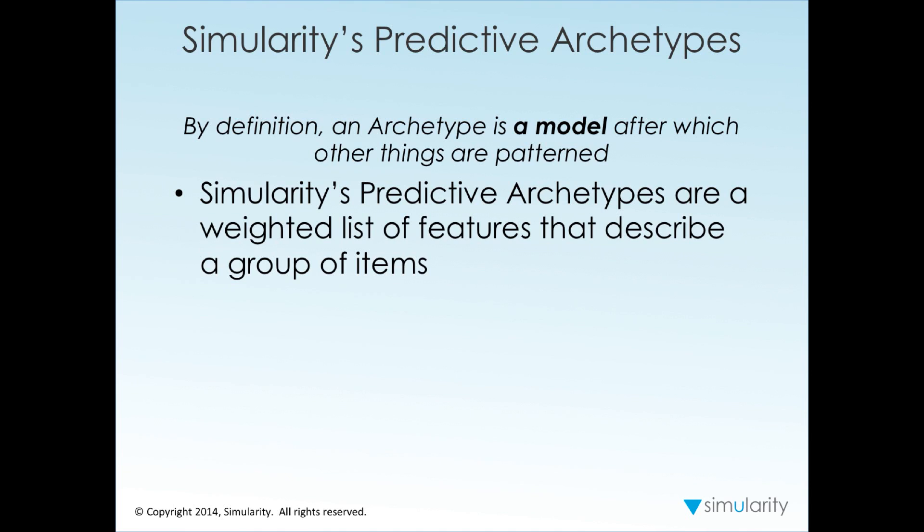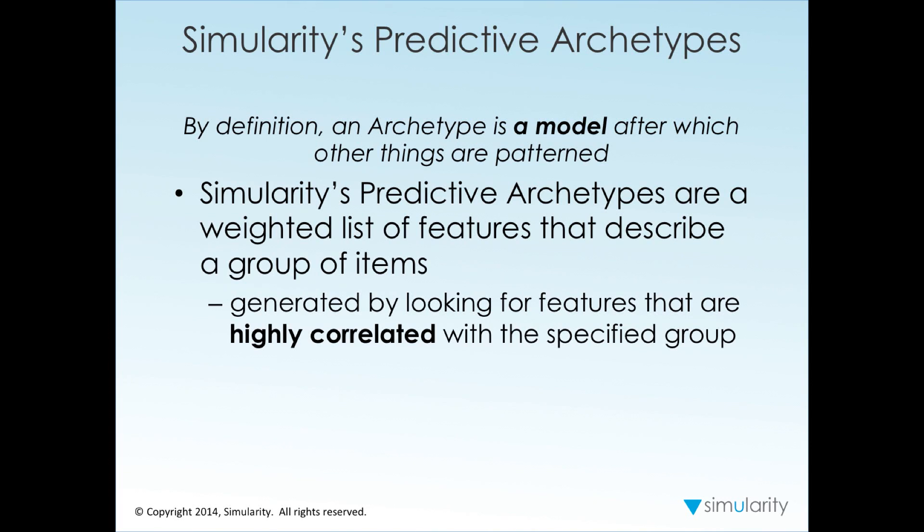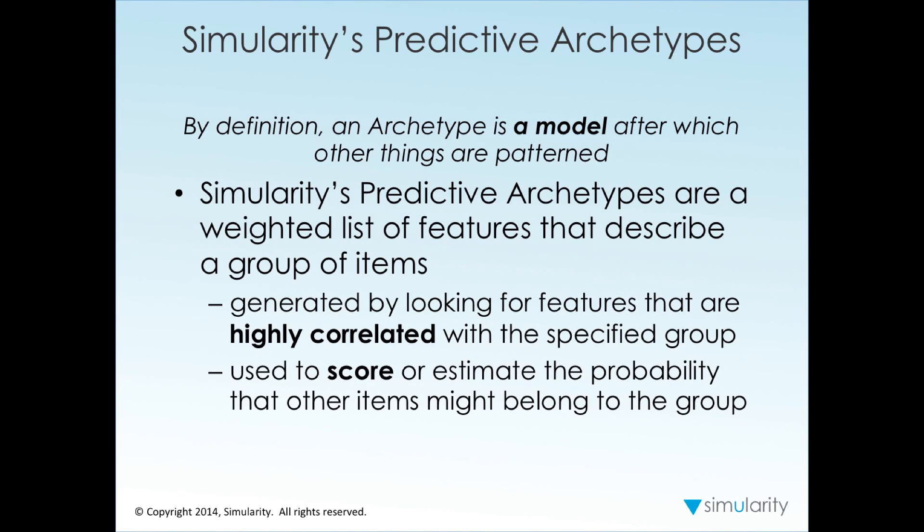Our predictive archetypes are a weighted list of features that describe a group of items. A group of items may be events that you're trying to model or predict. It's generated by looking for features that are highly correlated with the specified group, and you can then use this to score or estimate the probability that other items might belong to the group.